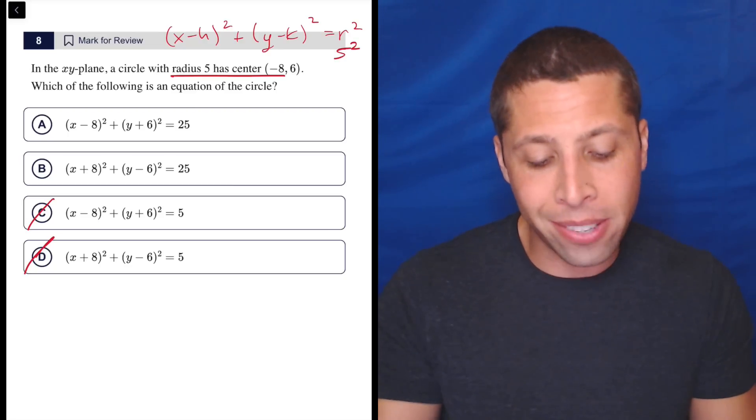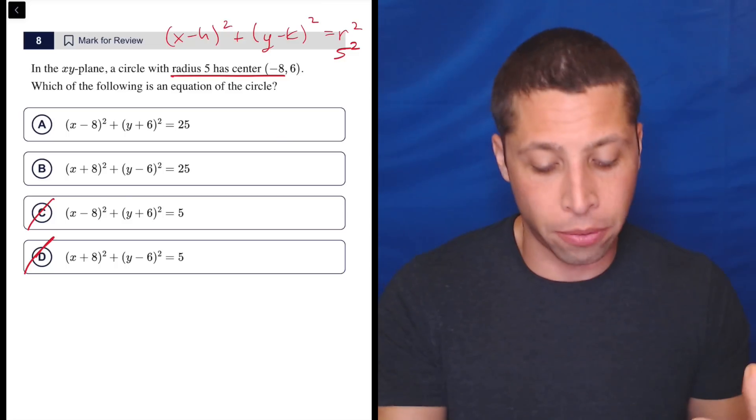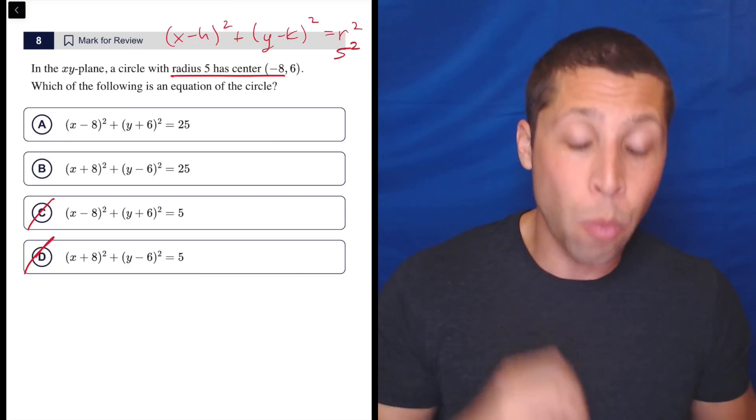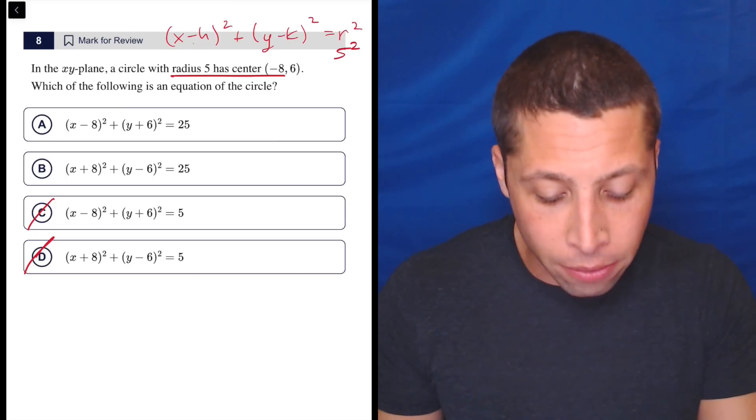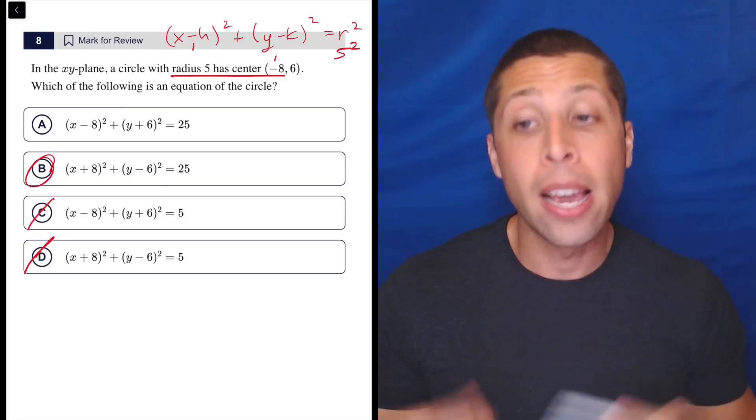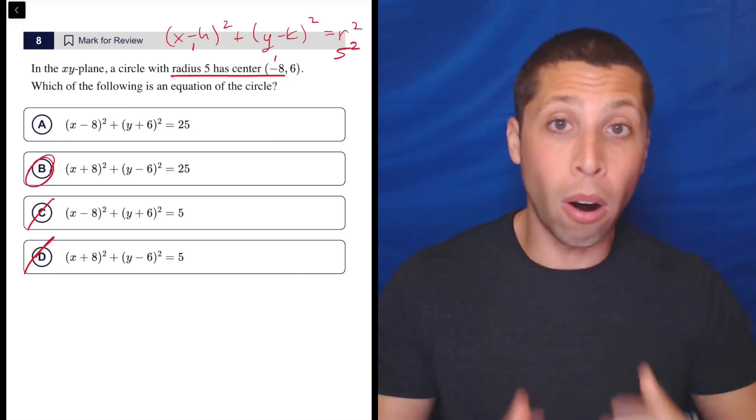And then the signs for the two center pieces are going to flip. So the negative eight, even though that is the h value, when we put it in, the negative that's there and the negative that's there are going to make a positive. So that's going to be plus eight and that's B, and that's the answer.